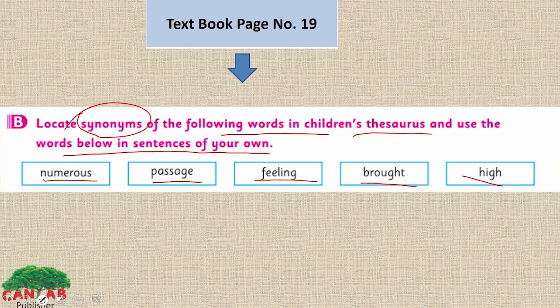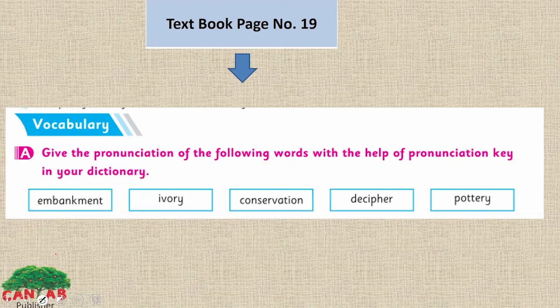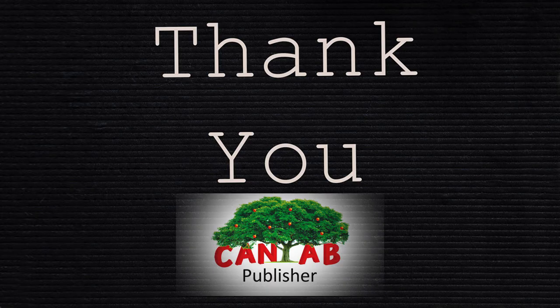Student, when you look up the pronunciation of any word in the dictionary, write it in the manner I have shown you as an example. This is how the pronunciation will be written. You have to write the pronunciation using phonetic symbols as shown in the dictionary. I have shown you both consonant and vowel sounds. I hope you have enjoyed my lesson. Thank you.